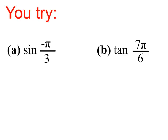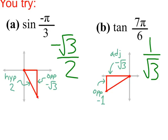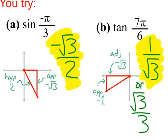I'm trusting you've done your duty here. The sine of negative π over 3 is negative root 3 over 2, the tangent of 7π over 6 is 1 over root 3, or root 3 over 3.